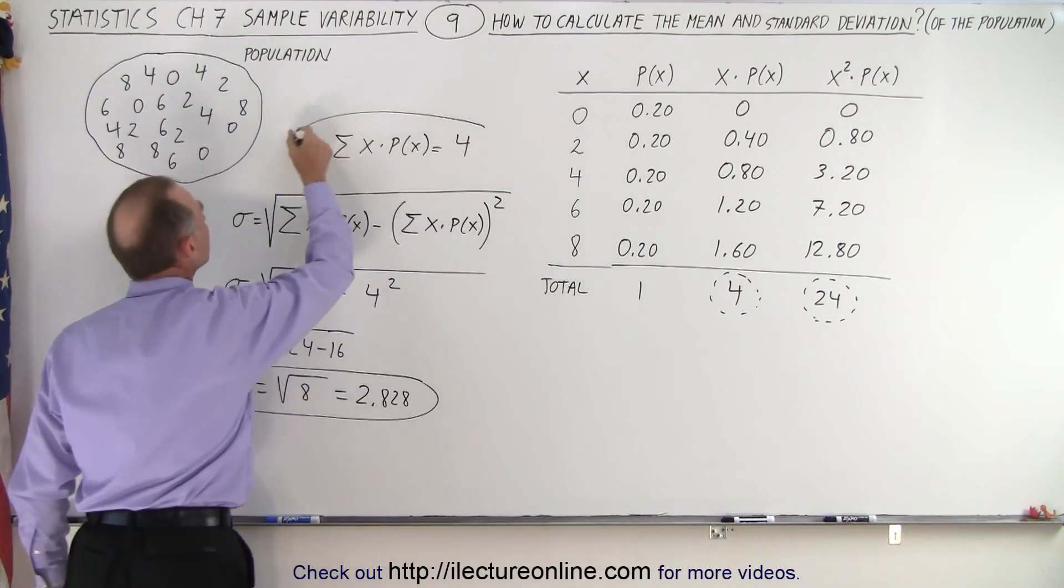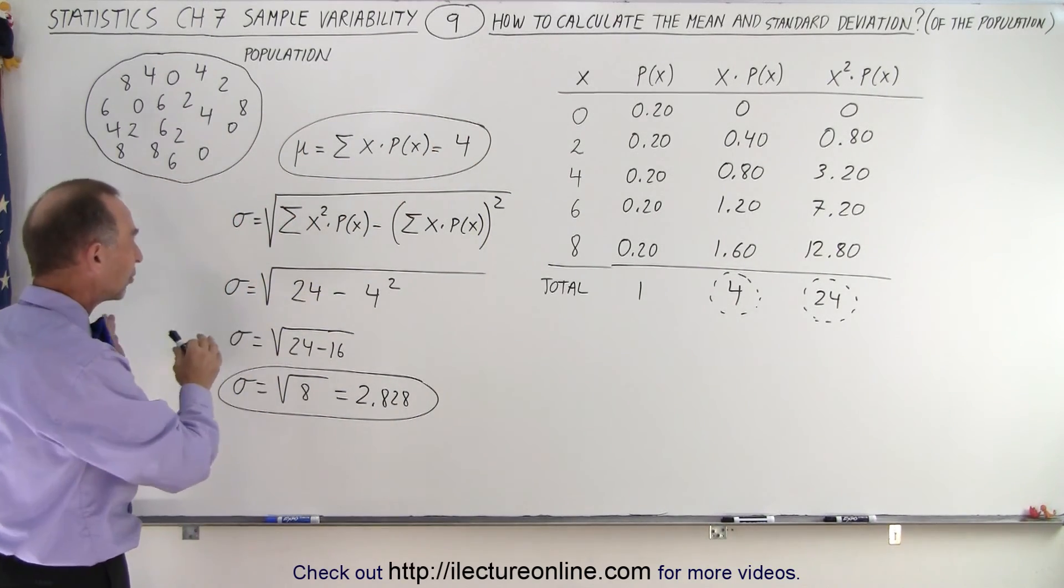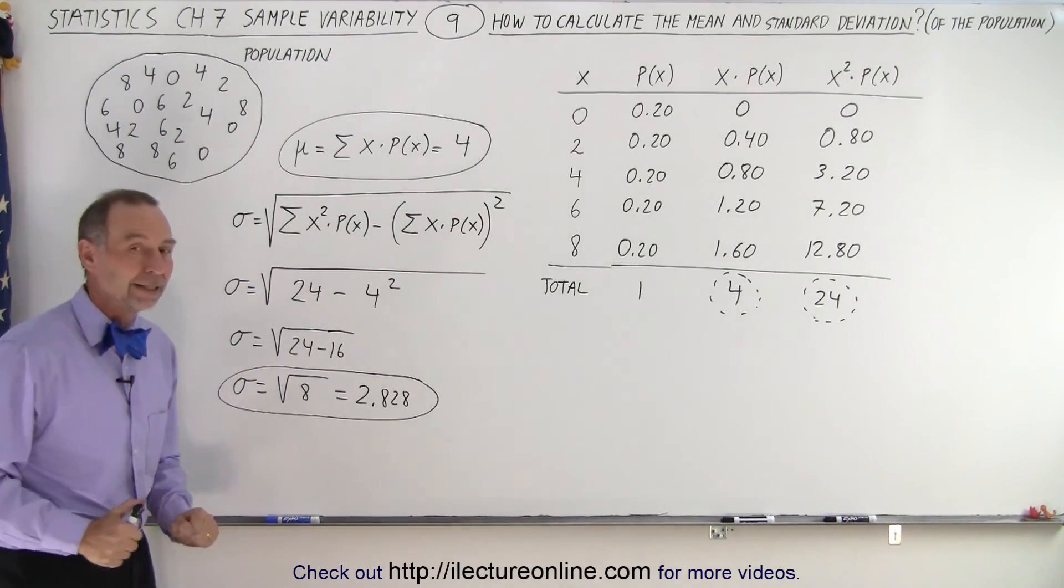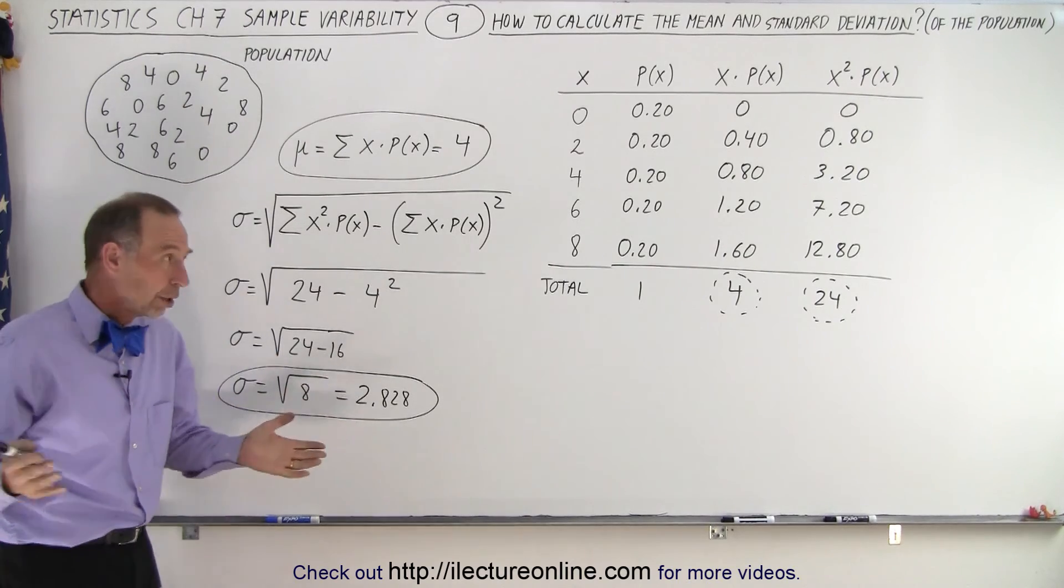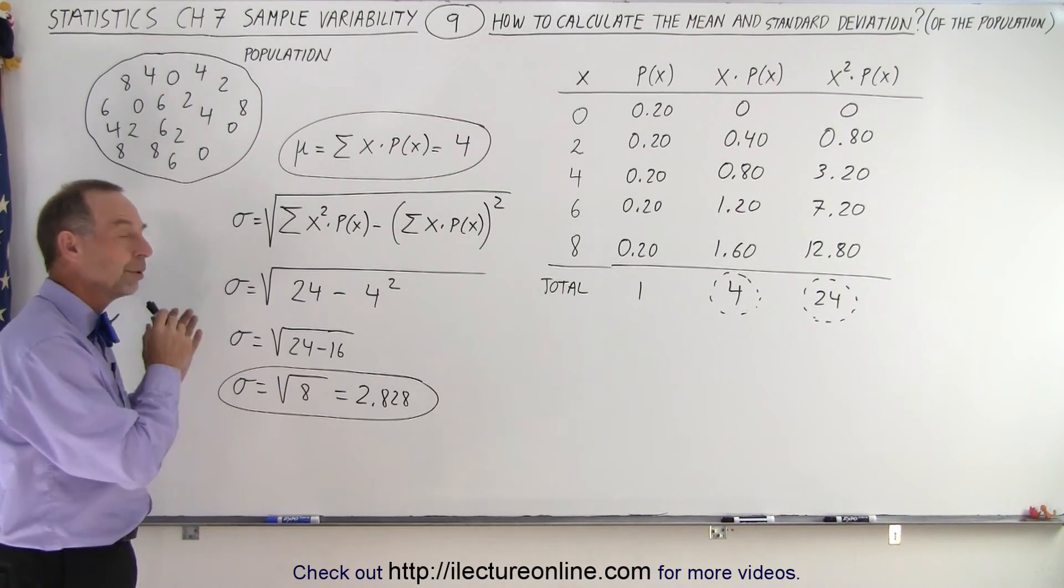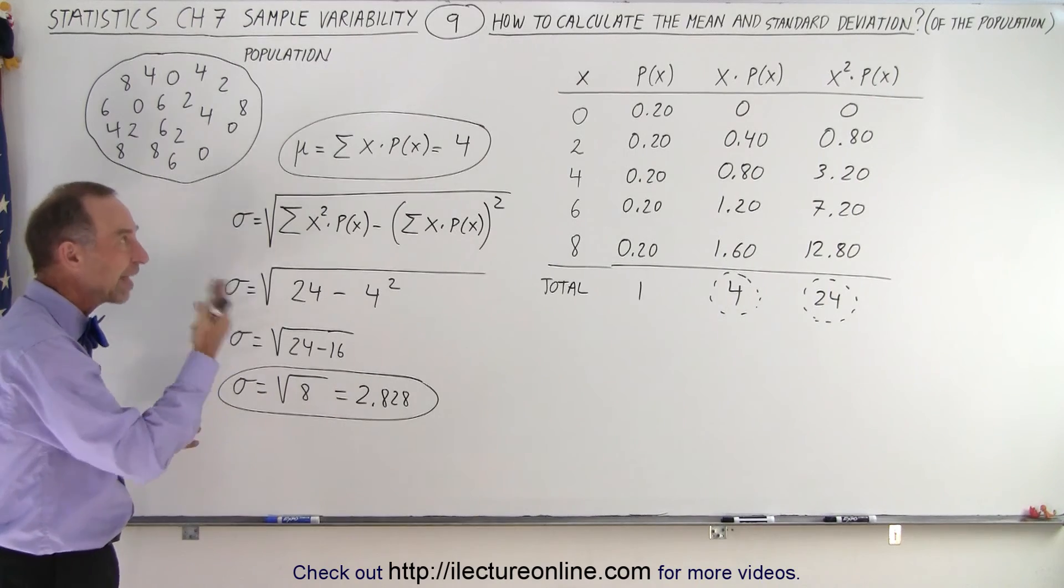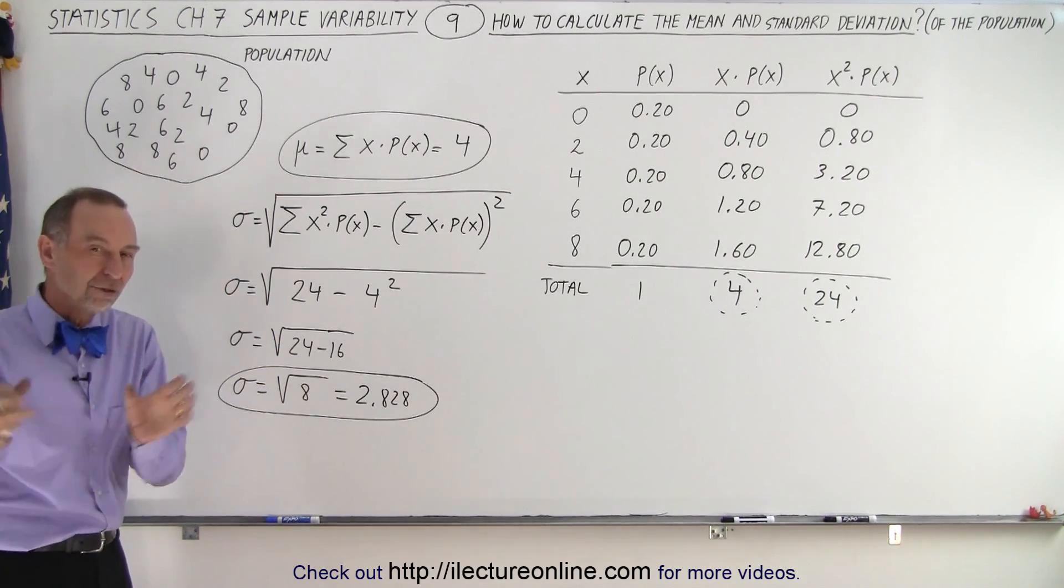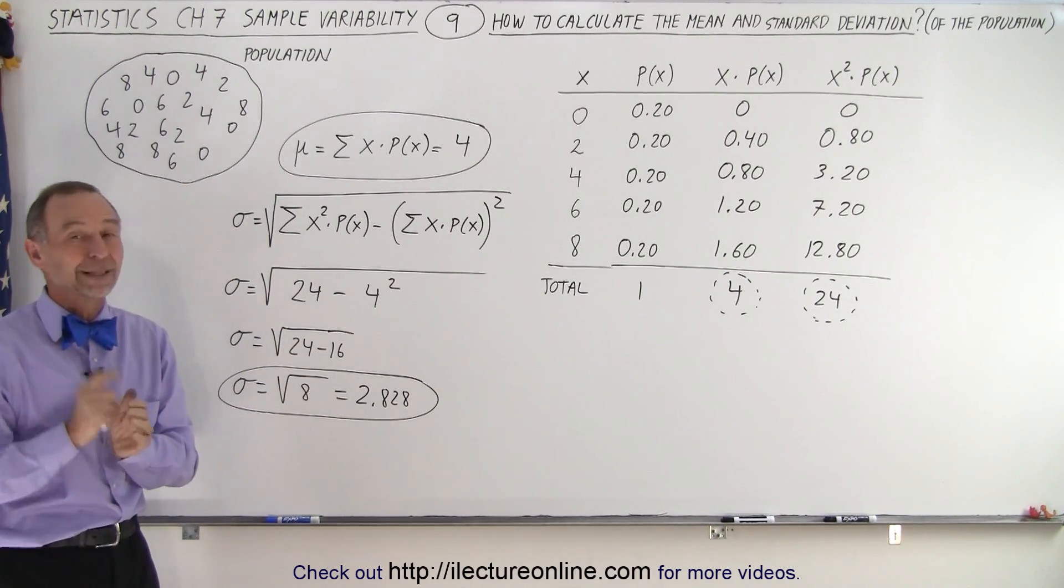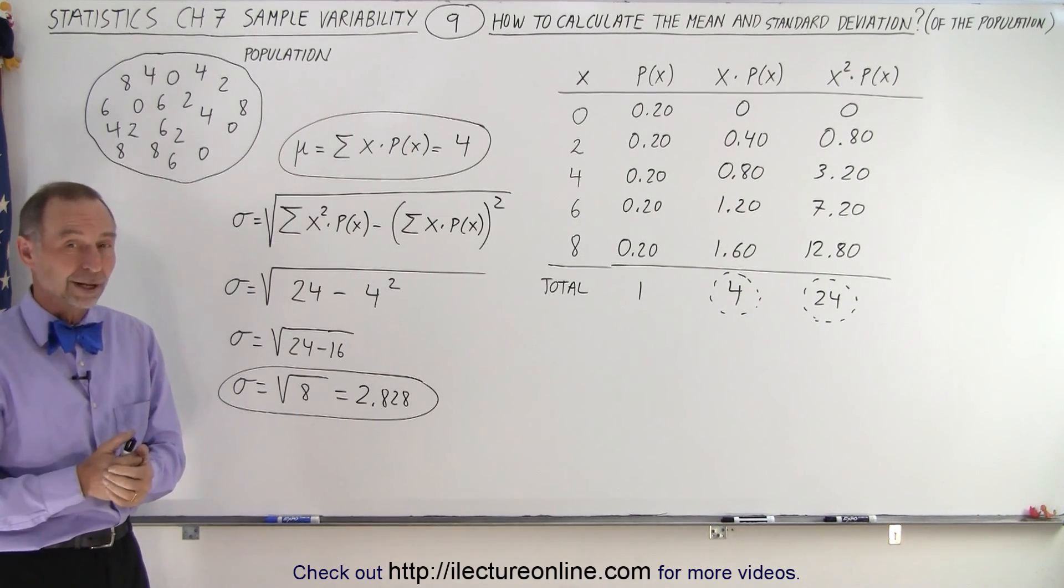And this here gives us the mean or the average of the population. So remember, this is how we find it for the population, looking at all the numbers. We get a probability based on the total population. Now, of course, if the population is really large, that becomes very difficult to do. And we need another method to make it more simple to do that. And that method, of course, is by taking samples and using the method of sampling and finding the mean and the standard deviation of the sample. And from that, then, calculate the mean and standard deviation of the population. That we'll do in the next video. So stay tuned and we'll show you how to do that as well.